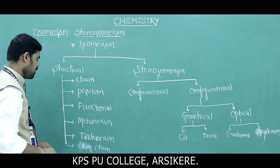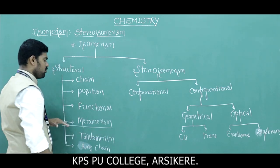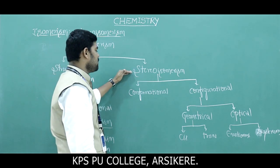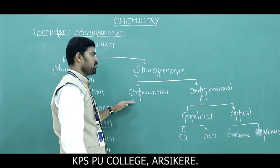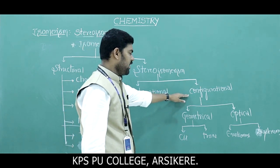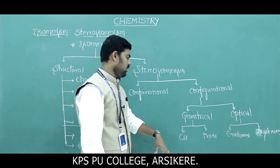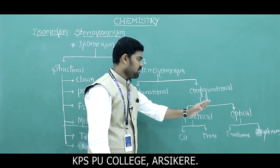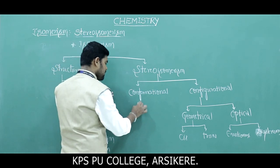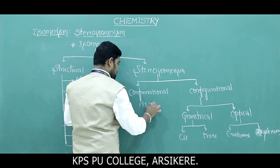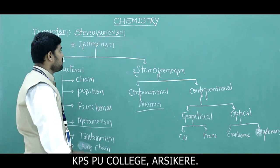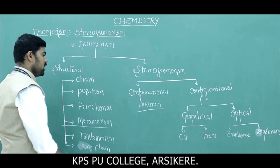So this is the complete classification of isomerism: structural isomerism includes chain, position, functional, metamerism, tautomerism, and ring-chain isomerism. Stereo isomerism includes conformational and configurational types, with configurational having geometrical (cis and trans) and optical forms — enantiomers and diastereomers. A good example for conformational isomerism is alkanes with free rotation.